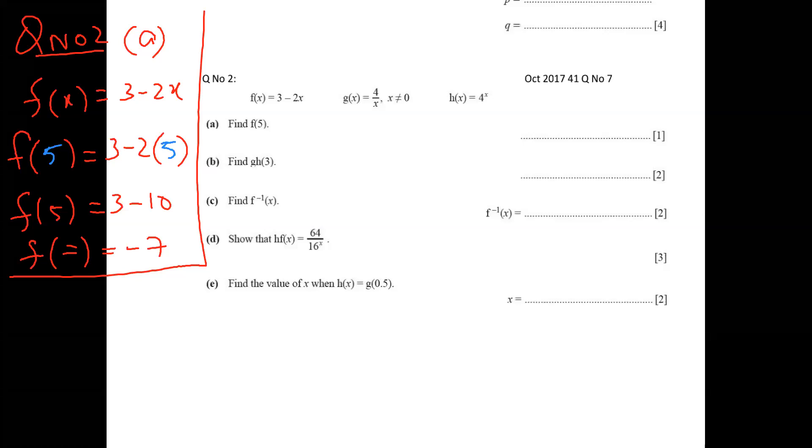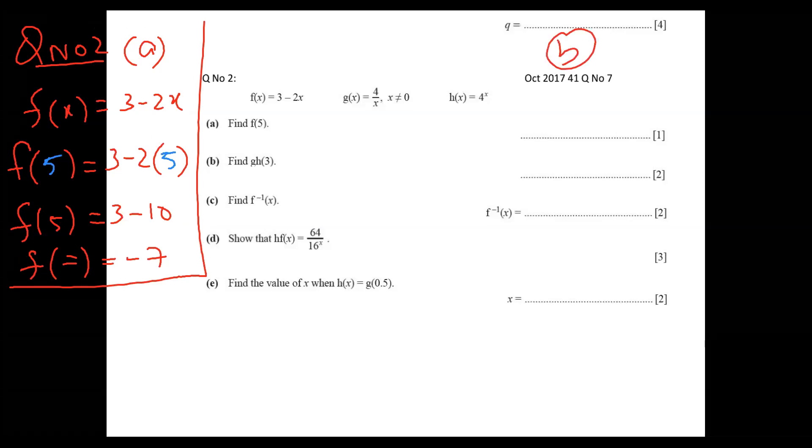Now part A is over, part B. Part B I do on the right hand side. Plan of action: G H of three. First I put three in H, then I put whole thing in G. So first of all, I'll go first part, three in H. So I must copy H function here.